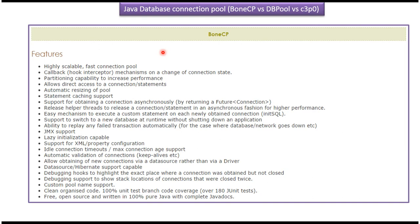Here you can see some of the features of BoneCP. It is a highly scalable and fast connection pool, and performance-wise it is better than C3PO and DPCP because it supports partitioning. It supports automatic recessing of the pool, JMX, and the ability to switch to a new database at runtime without shutting down the application. It also supports idle connection timeouts and max connection age.